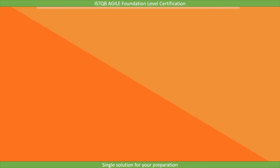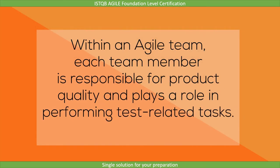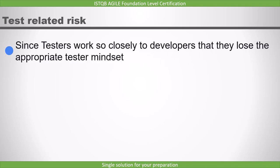An important point: within an Agile team, each team member is responsible for product quality and plays a role in performing test-related tasks. In an Agile project, the tester is not only responsible for maintaining quality — the entire team is responsible for it. In an Agile organization, there are test-related risks. For example, testers may work so closely with developers that they lose the appropriate tester mindset.